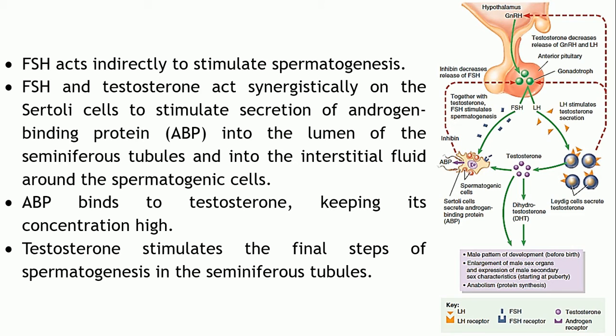The next hormone released by the anterior pituitary is FSH. Along with LH, FSH indirectly stimulates the process of spermatogenesis — the process of formation of sperms. FSH acts on the seminiferous tubules to stimulate spermatogenesis. Apart from that, FSH and testosterone both act on the Sertoli cells in a synergistic manner, meaning both have the same action on the Sertoli cells.